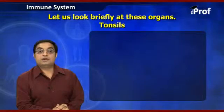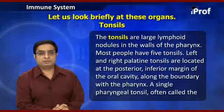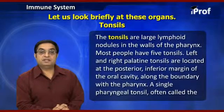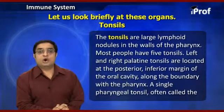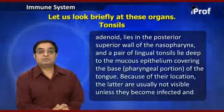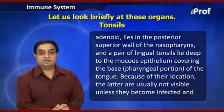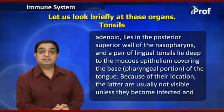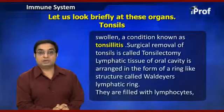Tonsils are large lymphoid nodules in the walls of the pharynx. Most people have five tonsils: the left and right palatine tonsils at the posterior inferior margins of the oral cavity along the boundary with the pharynx; a single pharyngeal tonsil, often called the adenoid, in the posterior superior wall of the nasopharynx; and a pair of lingual tonsils deep to the mucous epithelium covering the base of the tongue. Because of their location, lingual tonsils are usually not visible unless they become infected and swollen — a condition known as tonsillitis. Surgical removal of the tonsils is called tonsillectomy.